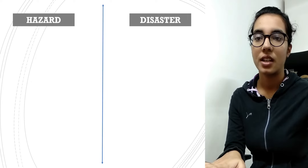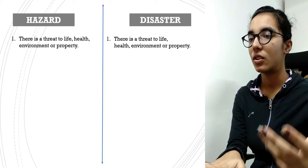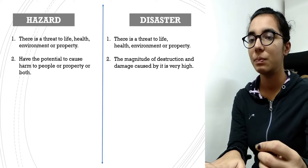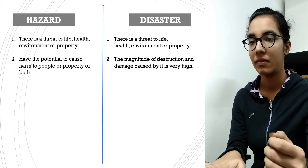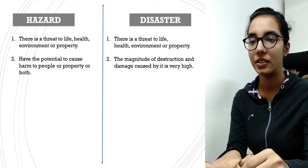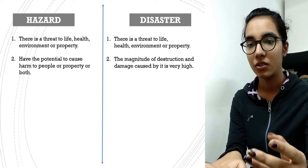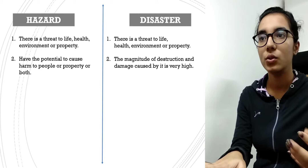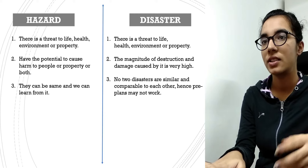Let's understand the difference between natural hazards and natural disasters. In both cases there is a threat to life, health, environment, and property. Natural hazards have the potential to cause harm to people or property or sometimes both. During a gas leak or an explosion it can affect both property as well as humans. On the other hand, natural disasters are larger in magnitude, and the destruction and damage caused by them are very high — if there is a huge crack due to an earthquake, it will not spare anyone.